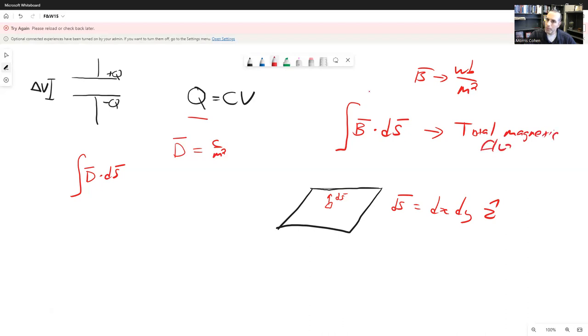This should make sense because B we call the magnetic flux density. And so when we integrate it over an area, we're taking the density and converting it into a total. So that's the total magnetic flux. We're going to call this a capital phi, and that's going to correspond to what we call magnetic flux.